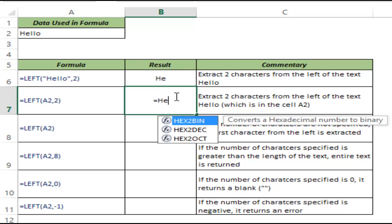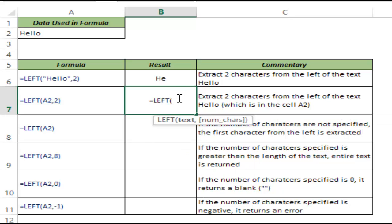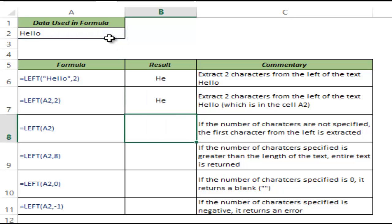As I said, we can either manually type the text or reference a cell. So here I give a reference of cell A2 and again ask it to return the two leftmost characters. And as expected, it again returns H and E.